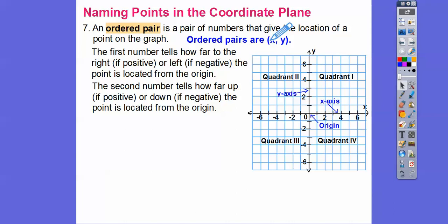Ordered pairs are always in alphabetical order — always, always. So if it said AB, this would be A, this would be B. Later on we have ordered pairs called HK. In my high school class we do lots of HK, and H comes before K in the alphabet, so it's always H comma K.